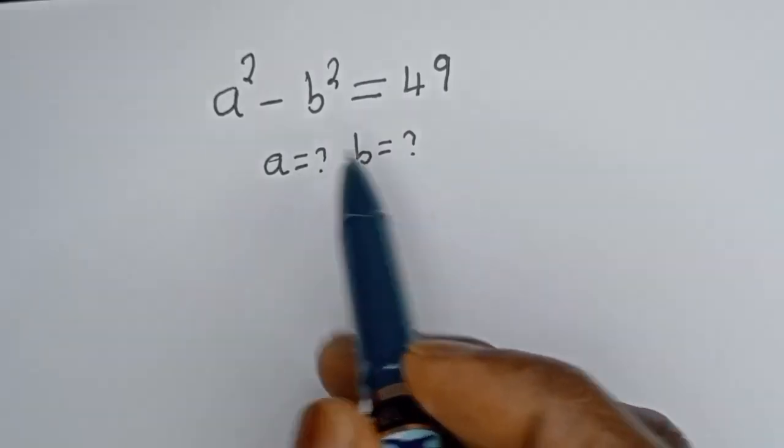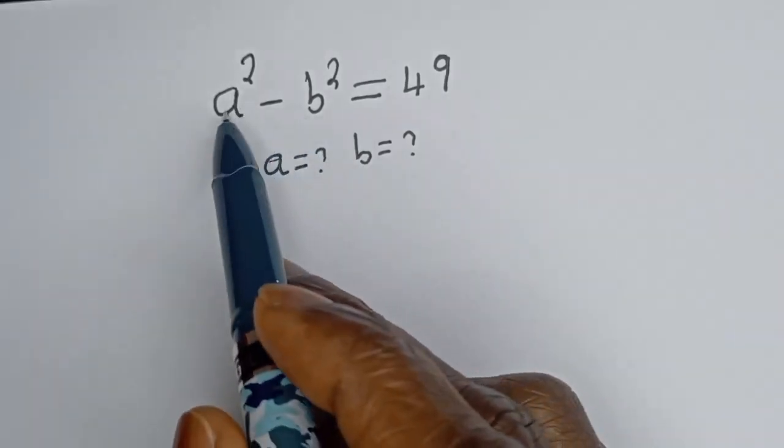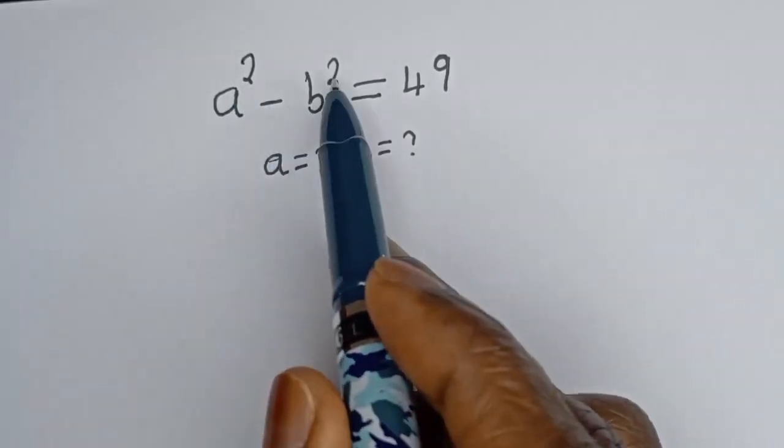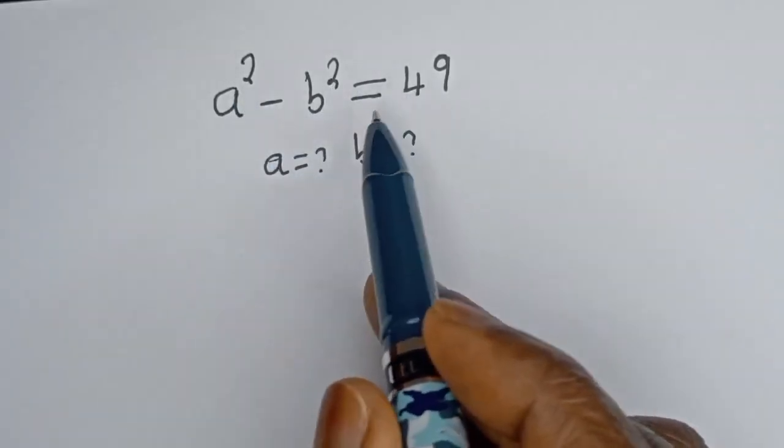How to solve for A and B in this equation: A squared minus B squared is equal to 49.